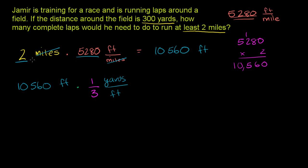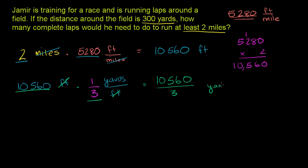2 miles is a ton of feet, so it made sense we were multiplying by a large number. Here, converting to yards, it makes sense we're dividing. So this becomes 10,560 times 1 divided by 3 — that's 10,560 over 3 — and the feet cancel out, leaving us with yards. So 2 miles is 10,560 divided by 3.